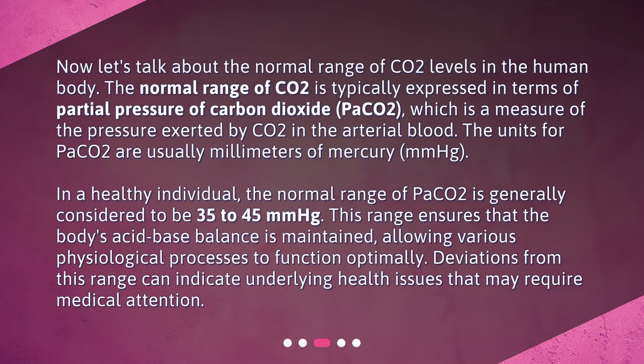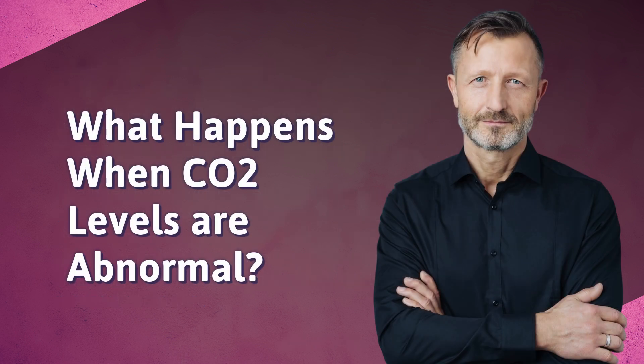The normal range of CO2 levels in the human body is typically expressed in terms of partial pressure of carbon dioxide (PaCO2), which measures the pressure exerted by CO2 in the arterial blood. The units for PaCO2 are millimeters of mercury (mmHg). In a healthy individual, the normal range of PaCO2 is generally considered to be 35 to 45 mmHg. This range ensures that the body's acid-base balance is maintained, allowing various physiological processes to function optimally. Deviations from this range can indicate underlying health issues requiring medical attention.